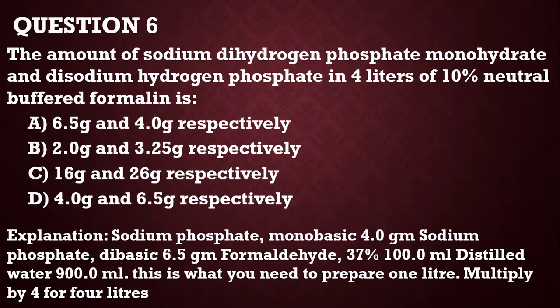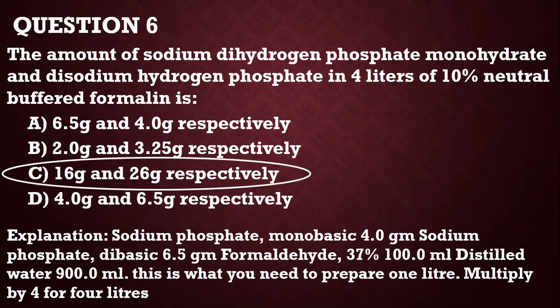The amount of sodium dihydrogen phosphate monohydrate and disodium hydrogen phosphate in 4 liters of 10% neutral buffered formaldehyde: the answer is 16 and 26 grams, because usually you have 4 grams of the first salt and 6.5 grams of the second salt per liter. For 4 liters, multiply by 4.